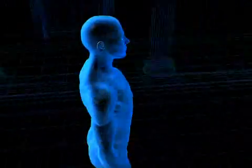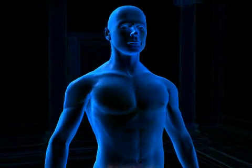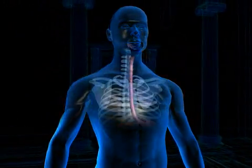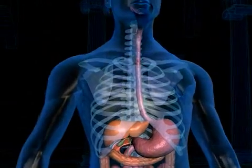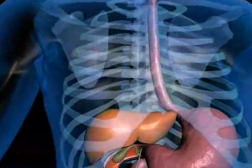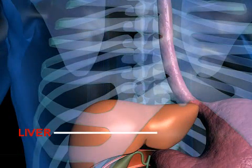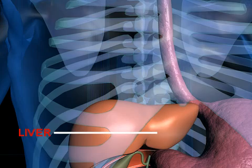The liver is a large, reddish-brown glandular organ located in the upper right portion of the abdominal cavity. It secretes bile and performs several important functions.